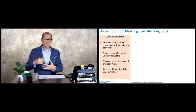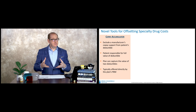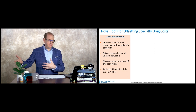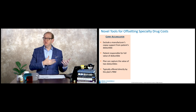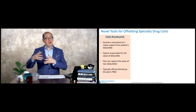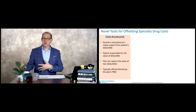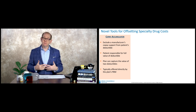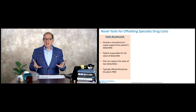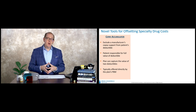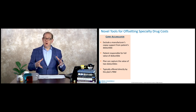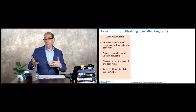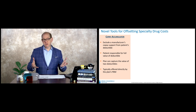An accumulator means basically we're going to accumulate how much the patient is actually paying out of pocket, and that's the only part that counts toward their deductible. Therefore, a manufacturer's copay support will not accumulate toward the patient's deductible payment, and the patient will still be responsible for the deductible even if the manufacturer provides copay support to pay for it. So from the plan's perspective, they effectively get the value of two deductibles.